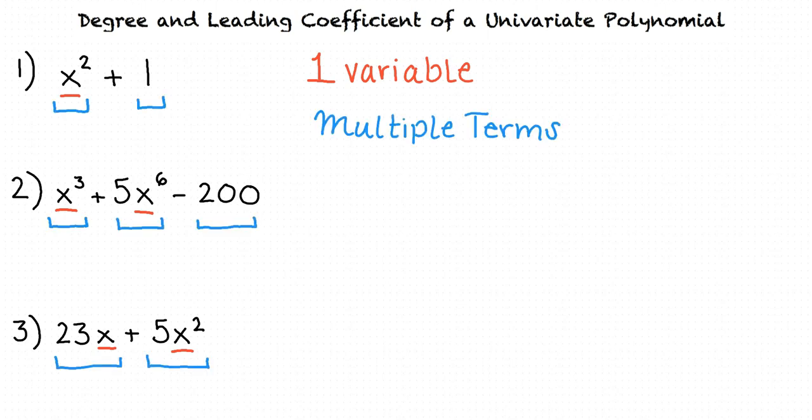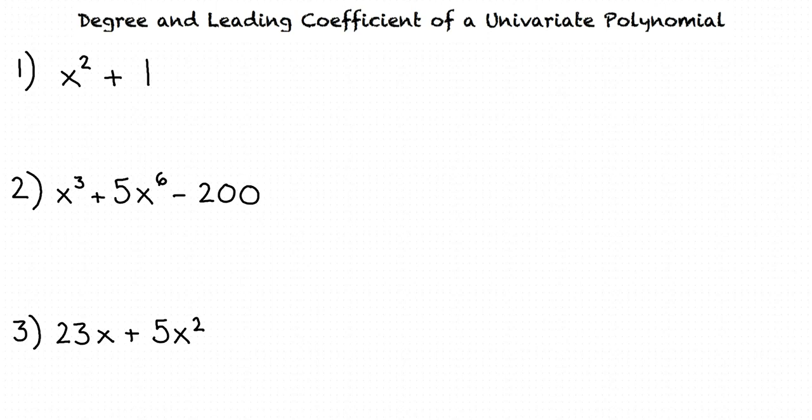What is a degree? The degree of a polynomial is the highest power that a variable is raised to. So in the first expression, it is a degree 2 polynomial, since 2 is the highest power.